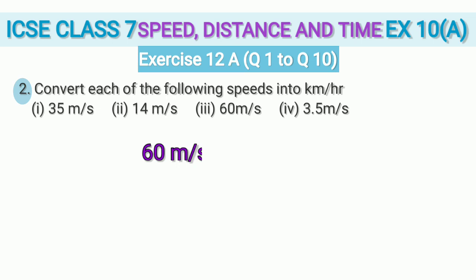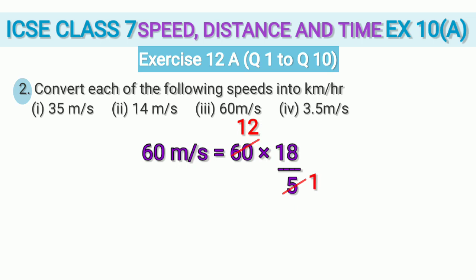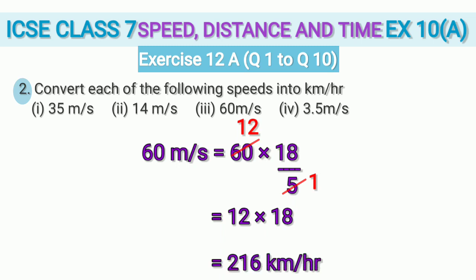The third sub-question is 60 m/s. We multiply by 18/5 to convert to km/h. Using the 5 times table to cancel 5 and 60 — 5 twelves are 60 — we have 12 × 18 = 216 km/h. So 60 m/s is 216 km/h.